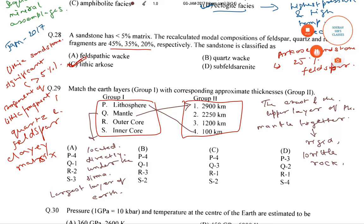Next is outer core, which consists of melted metal, nickels and iron. Its corresponding thickness is 2,250 km. And the last is inner core, and its corresponding thickness is around 1,200 km. So the correct answer is option number A.